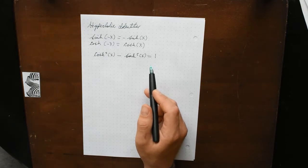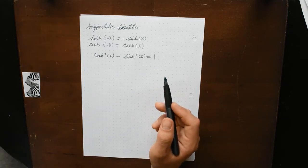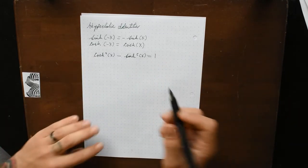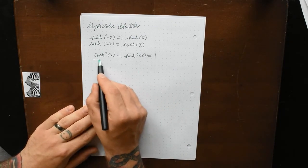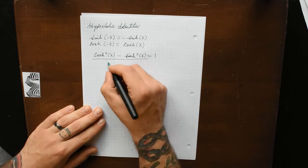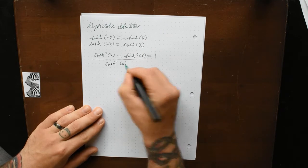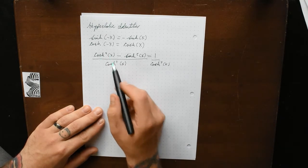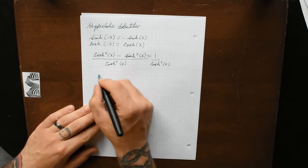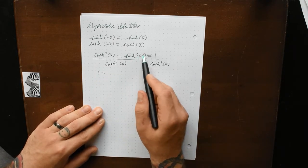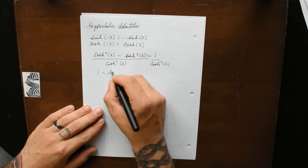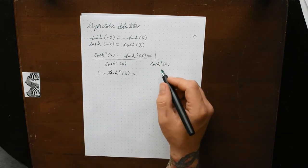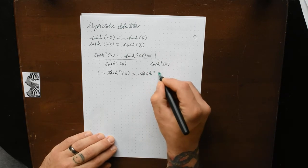From this identity, we can still manipulate this equation like a normal trigonometric identity. If we divide both sides by cosh²(x), we get: cosh²(x)/cosh²(x) is 1, minus sinh²(x)/cosh²(x) is tanh²(x), and that equals 1/cosh²(x), which is sech²(x). So 1 minus tanh²(x) equals sech²(x).